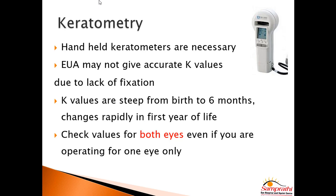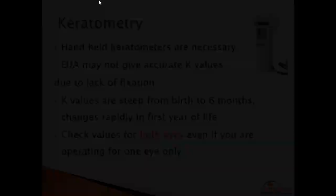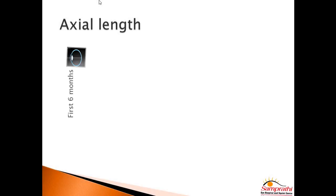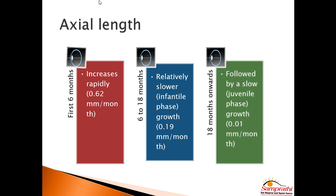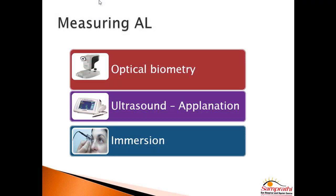It's important to check both eyes even if you are doing surgery for only one eye. Errors in axial length are very significant because each millimeter of error can contribute to 2.5 diopters of change in IOL power, and in hyperopic short eyes it may almost go to 3.75. In the first six months, axial length increases rapidly at about 0.62 millimeters per month; from six to eighteen months it's about 0.19; and post eighteen months it slows further. So in the first 18 months, accurate axial length measurement is critically important.